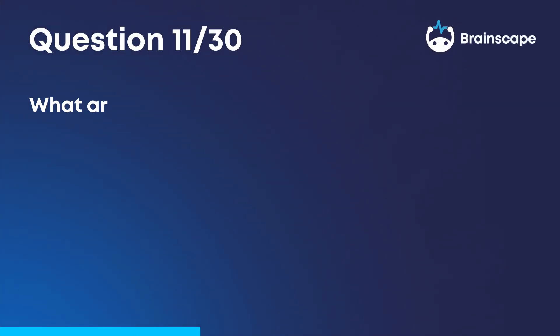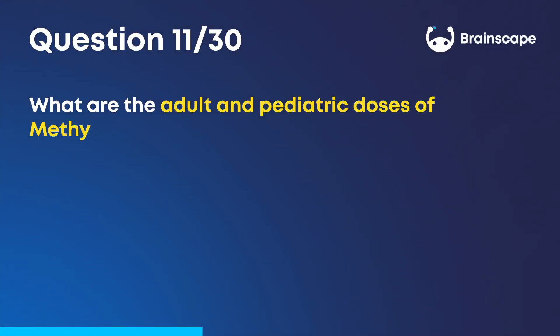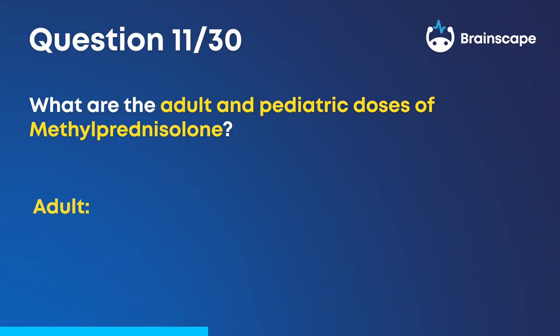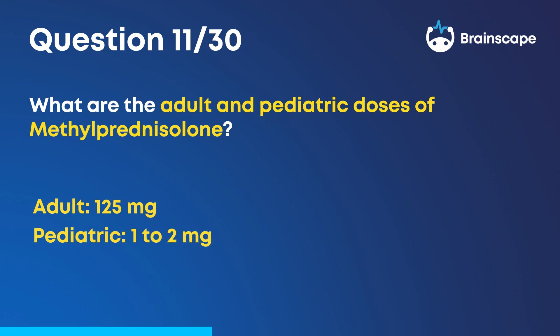Question 11. What are the adult and pediatric doses of methylprednisolone? For adults, it's 125 milligrams. For pediatric patients, it's 1 to 2 milligrams per kilogram.